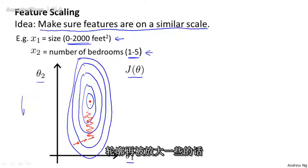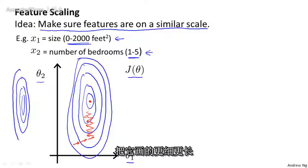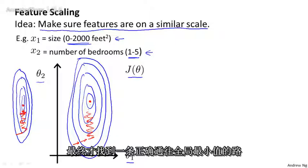In fact, you can imagine if these contours were exaggerated even more, incredibly skinny, tall contours, it can be even more extreme than that. Then gradient descent will have a much harder time meandering around. It can take a long time to find its way to the global minimum.